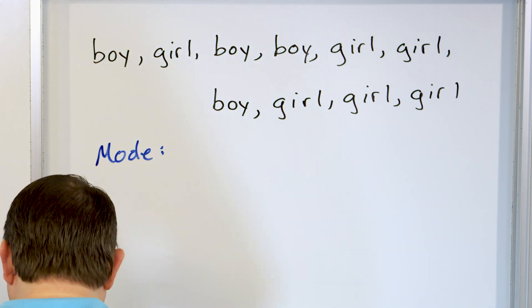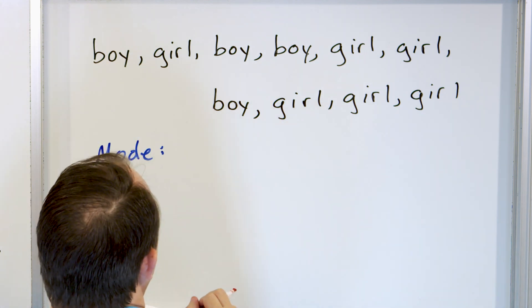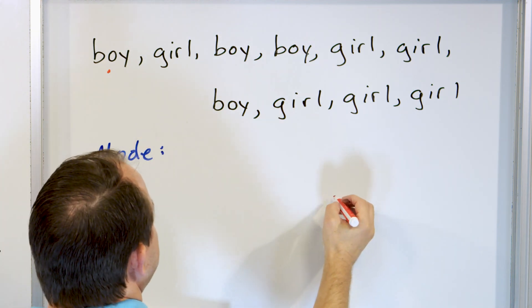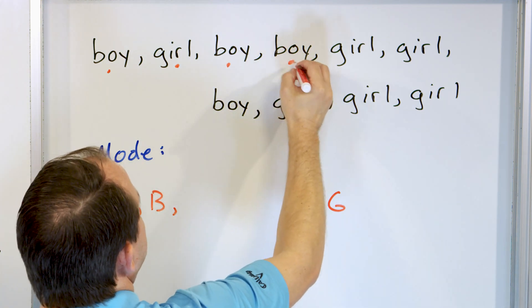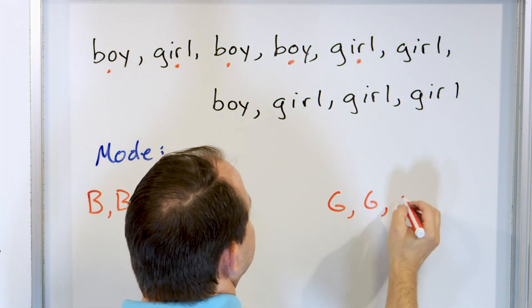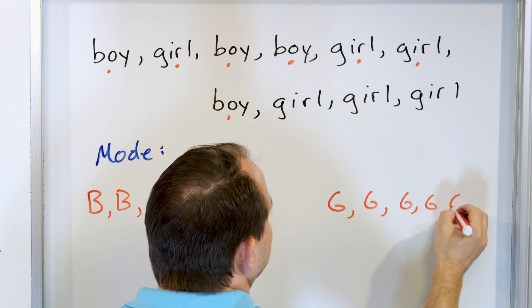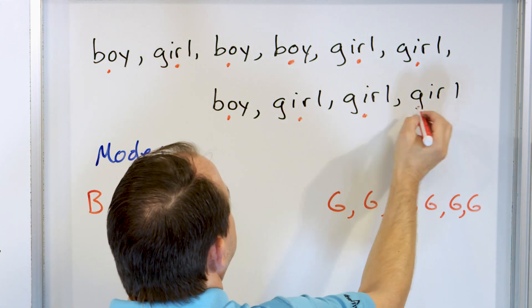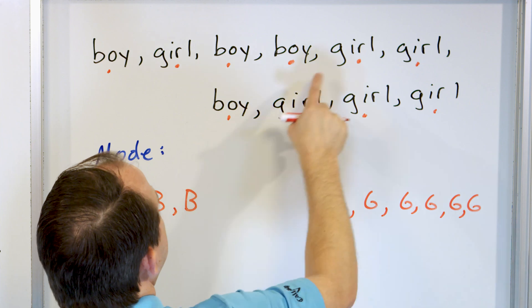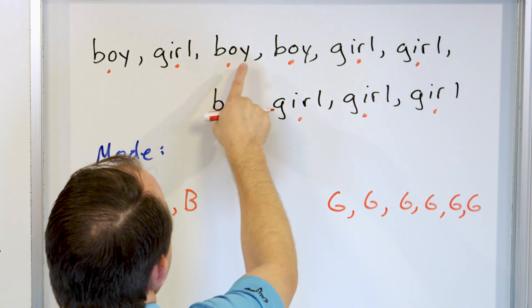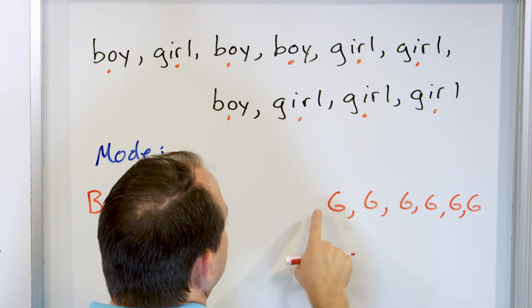So because this data is non-numerical, we're going to use the mode. Let's actually find the mode. We have a boy column and a girl column. Counting through the data: four boys and six girls. The mode is the most common value — so the mode in this case is girl, because we have more girls than boys. It's just the item in the data set that occurs most often.